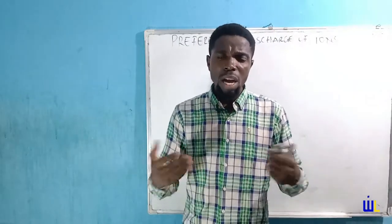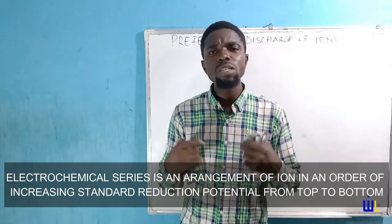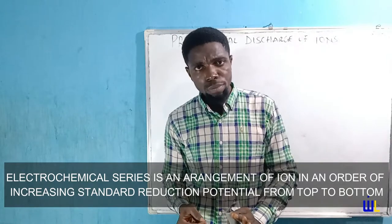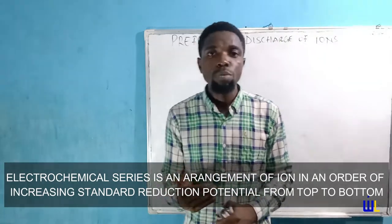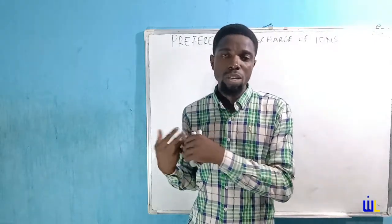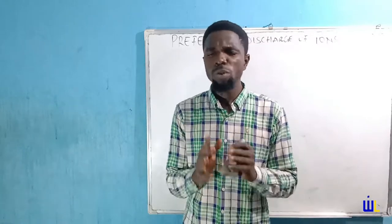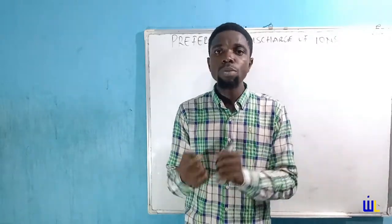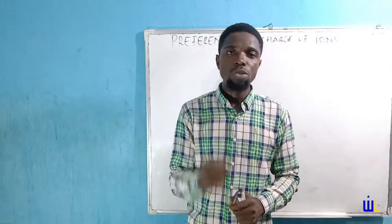Let's start with the first one: position in the electrochemical series. First of all, we need to understand the electrochemical series. The electrochemical series is an arrangement of ions on the basis of increasing standard reduction potential from top to bottom. For our basic understanding in this video, take standard reduction potential as the potential to be reduced. So it increases from top to bottom, and that is what defines the electrochemical series.